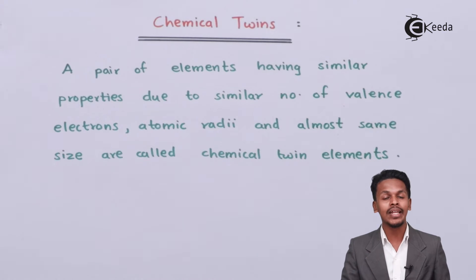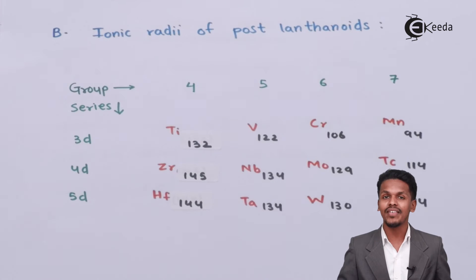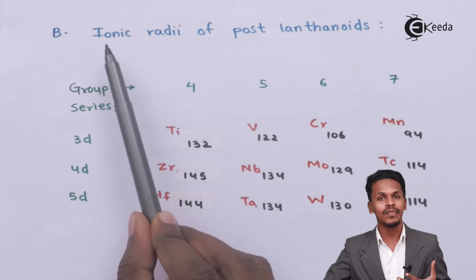We're talking about chemical twins because of the lanthanide contraction. In the previous topic, we discussed the effect of lanthanide contraction on the ionic radii for post-lanthanoids.